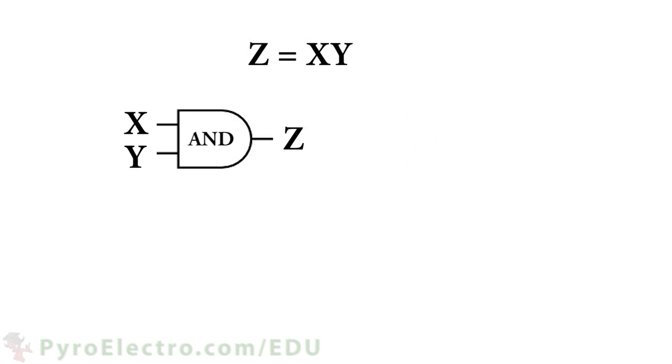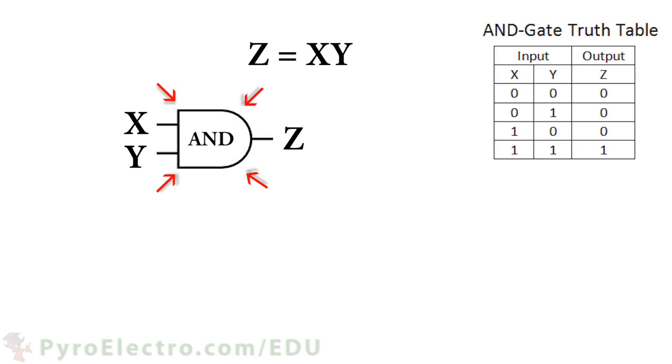Back in lesson 2, we learned that the AND gate looked like this and that it had a corresponding truth table that defined the four possible output states, given two inputs.